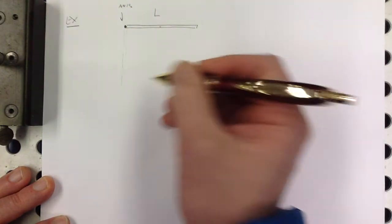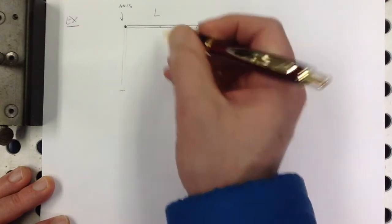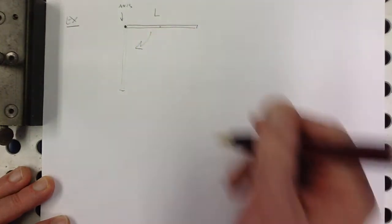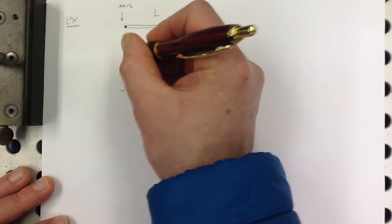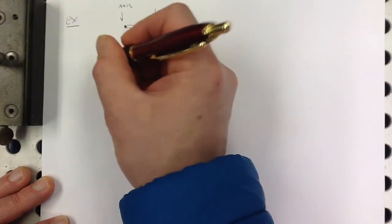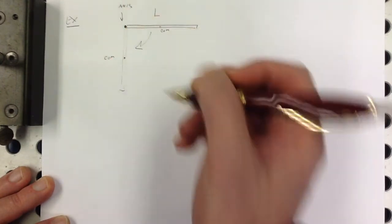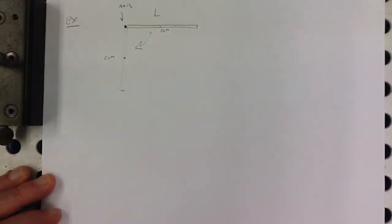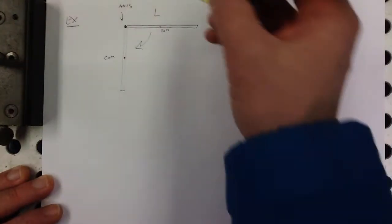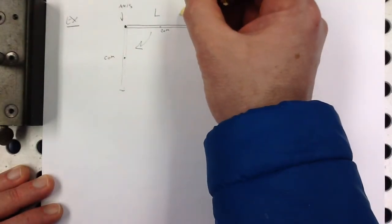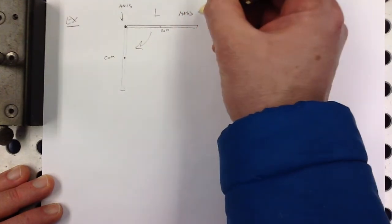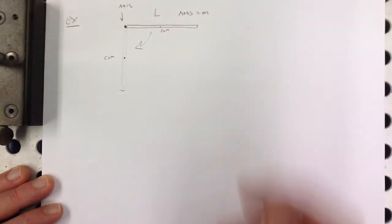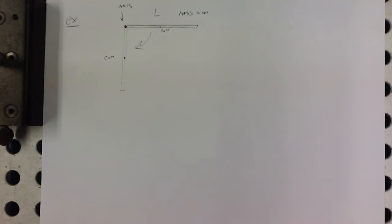Let's say it has mass m. And I don't think I need to tell you anything else. I think we just need to know an expression for the length of it and the mass m.